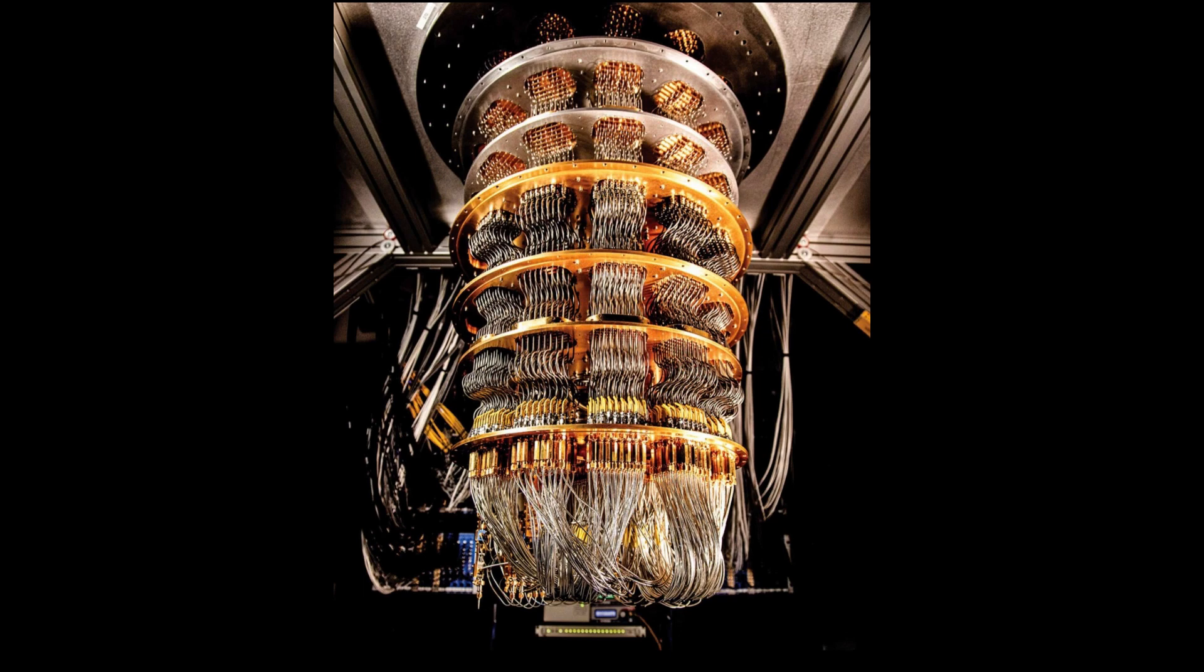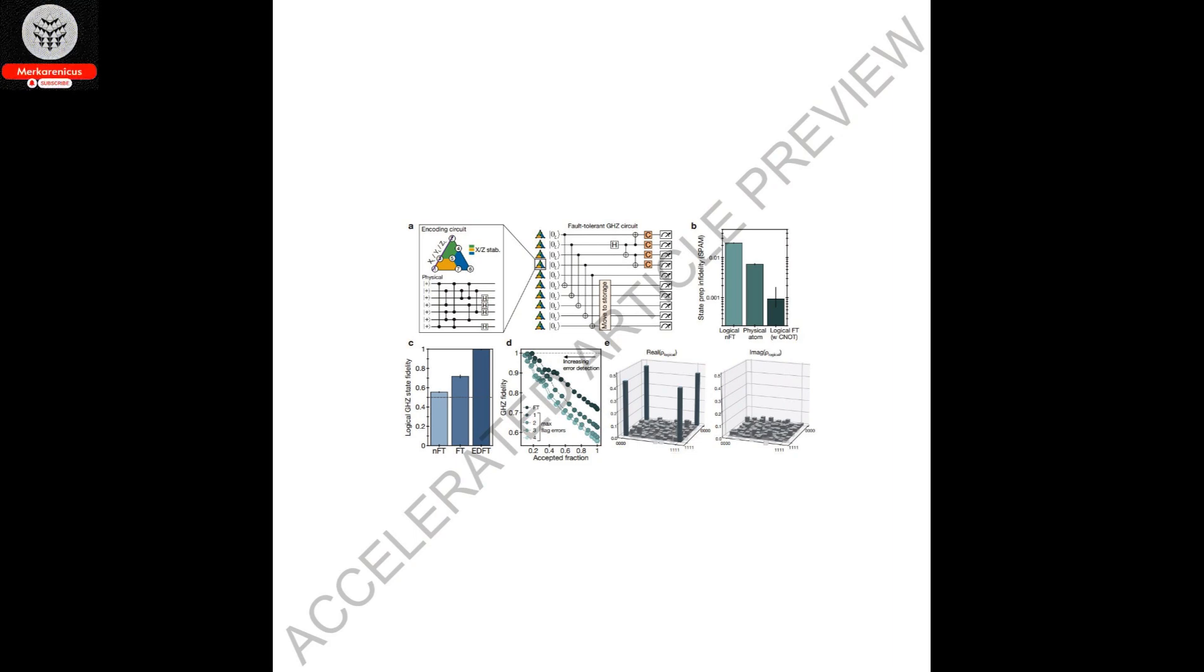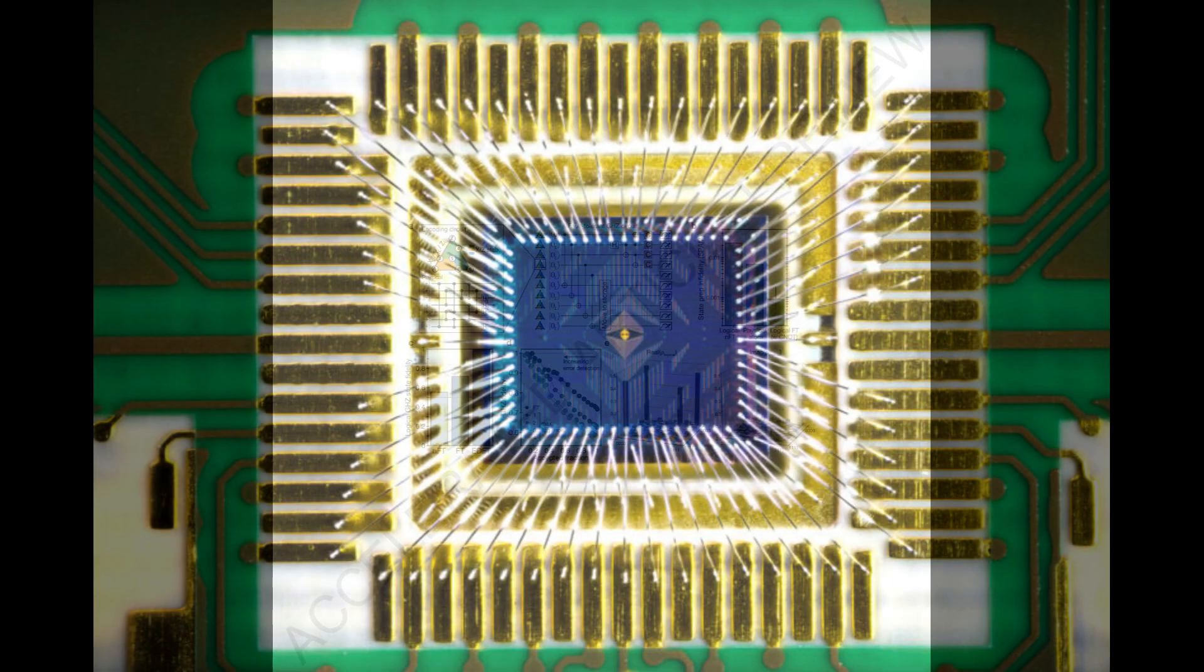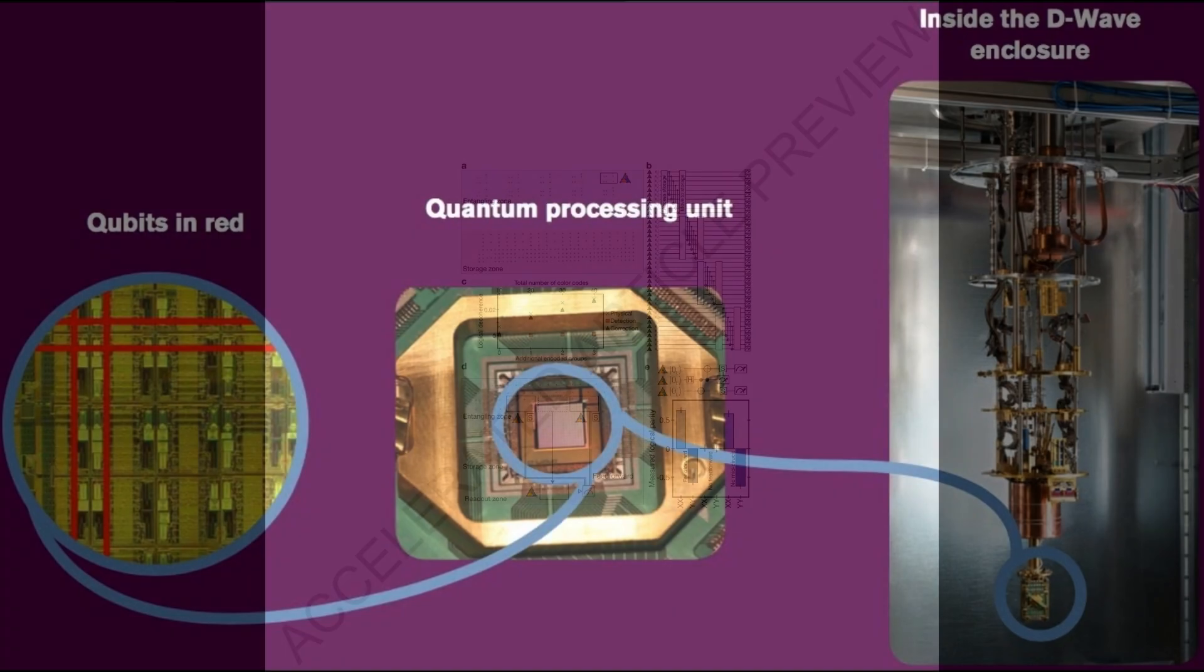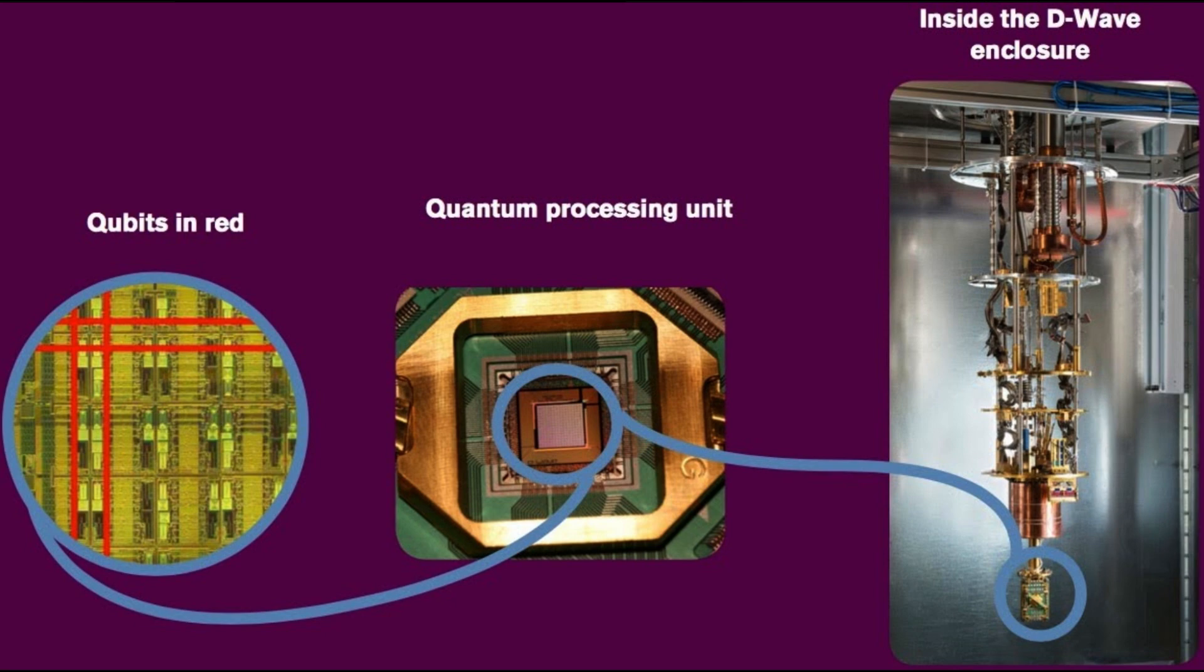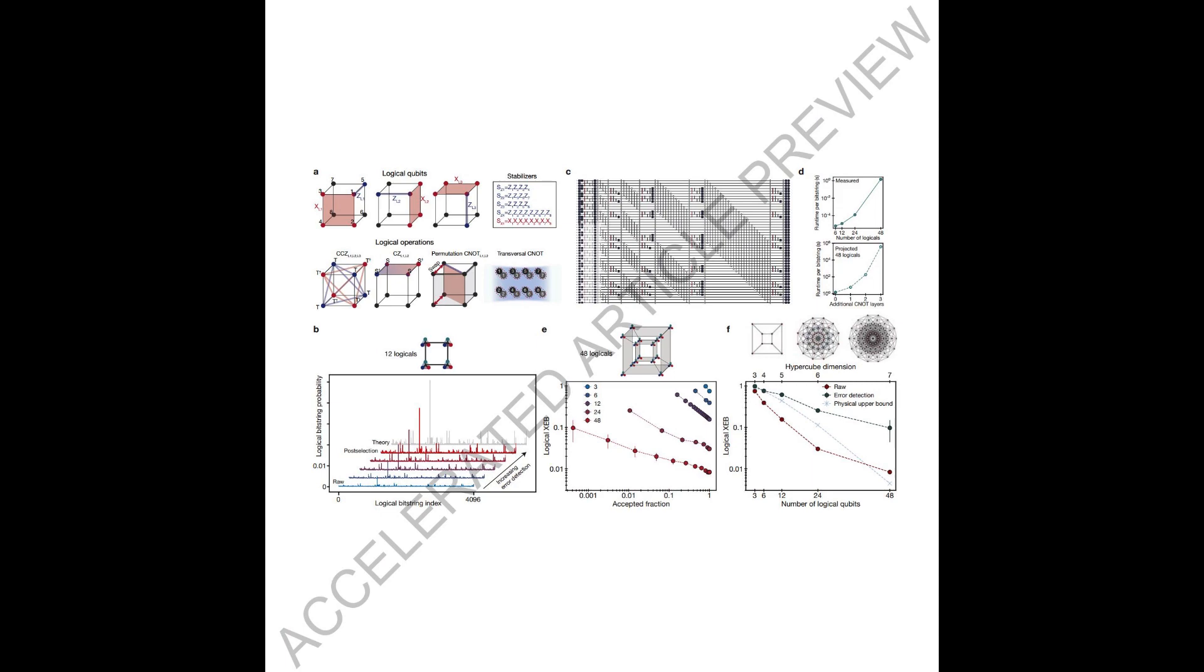This groundbreaking system can encode a staggering 48 logical qubits and carry out numerous logical gate operations. It represents a significant milestone in the field of quantum computing as it showcases the first instance of executing complex algorithms on an error-corrected quantum computer. This remarkable progress is a result of years of dedicated research on the neutral atom array quantum computing architecture.